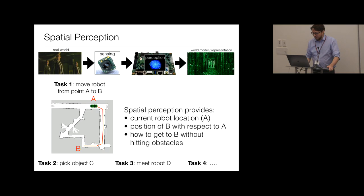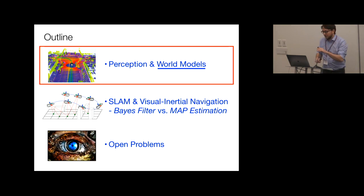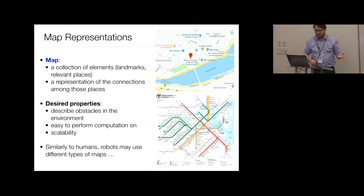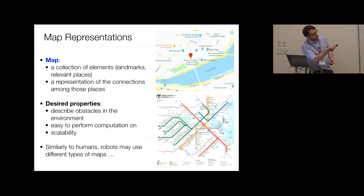Let me complete this overview by talking about world models. The goal of perception is to build a representation of the world. A map is a collection of landmarks, relevant places, and possibly a representation of connections among places — similar to Google Maps, which shows positions of landmarks and lanes expressing connectivity. Desirable properties for robotic maps include describing obstacles, supporting computation, and being scalable for large-scale environments.